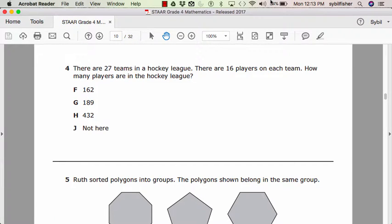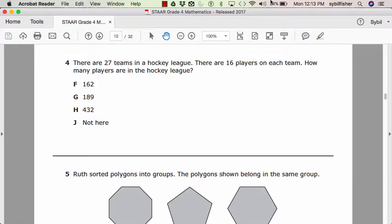Number 4. There are 24 teams in a hockey league. There are 16 players on each team. How many players are in the hockey league? F, 162. G, 189. H, 432. J, not here.